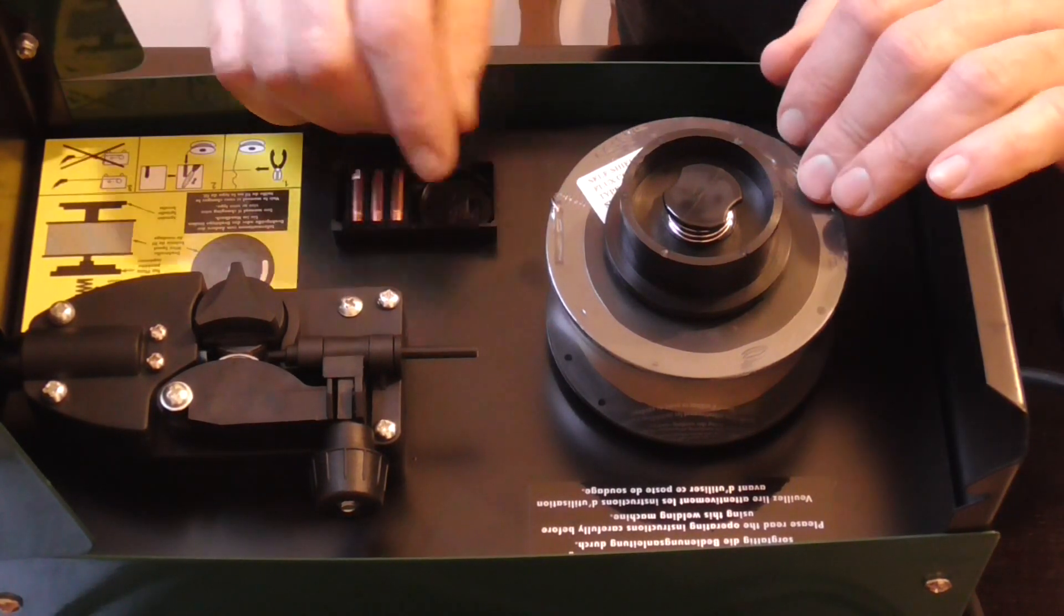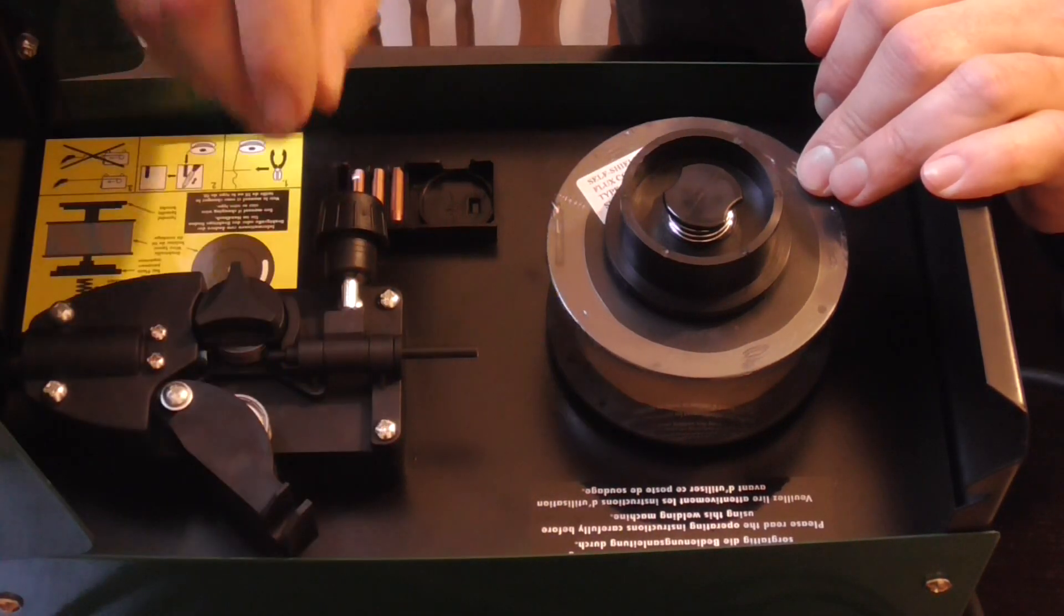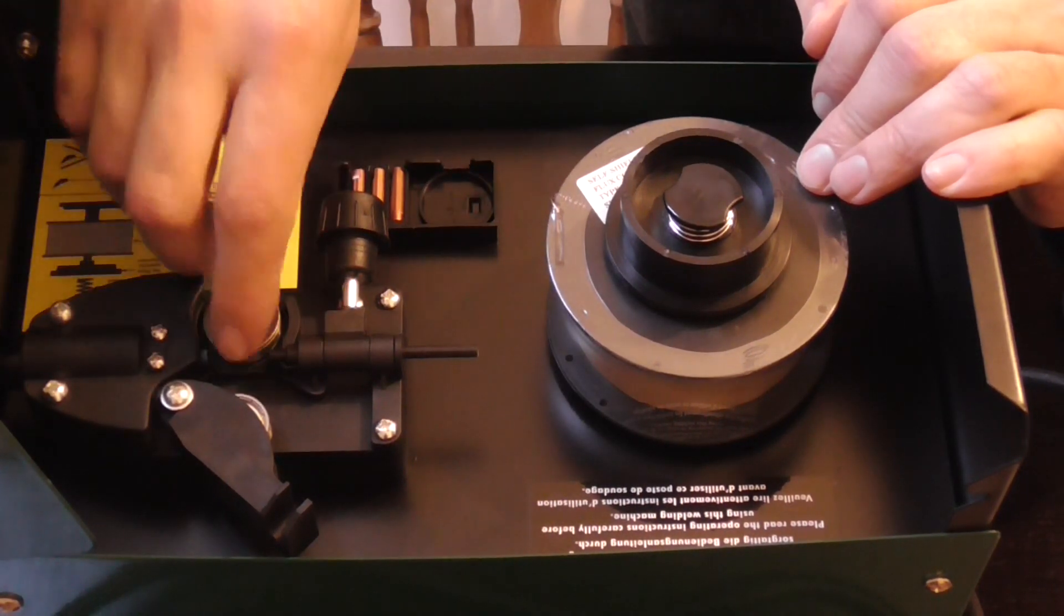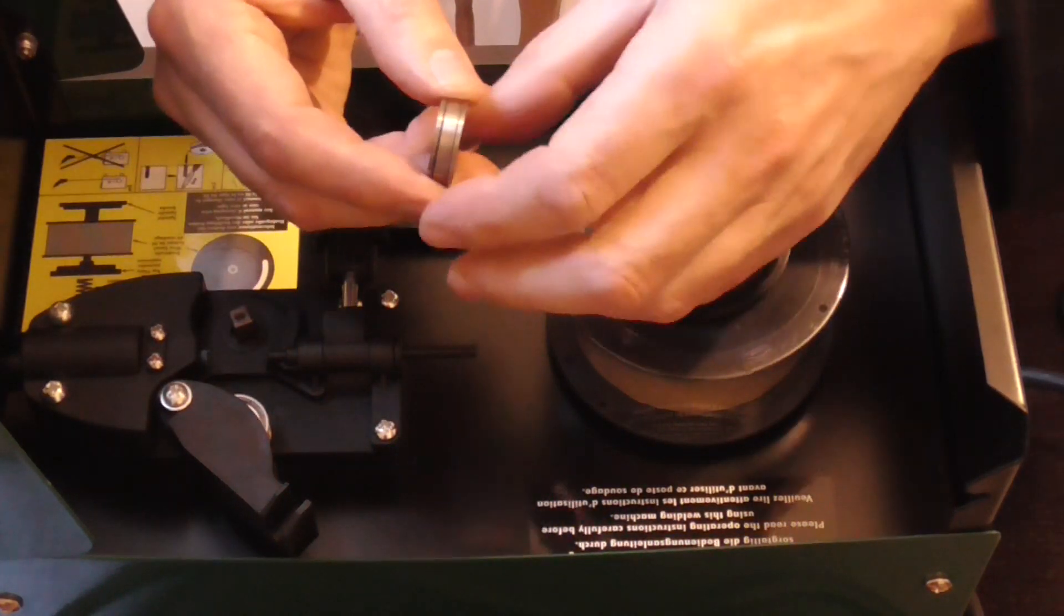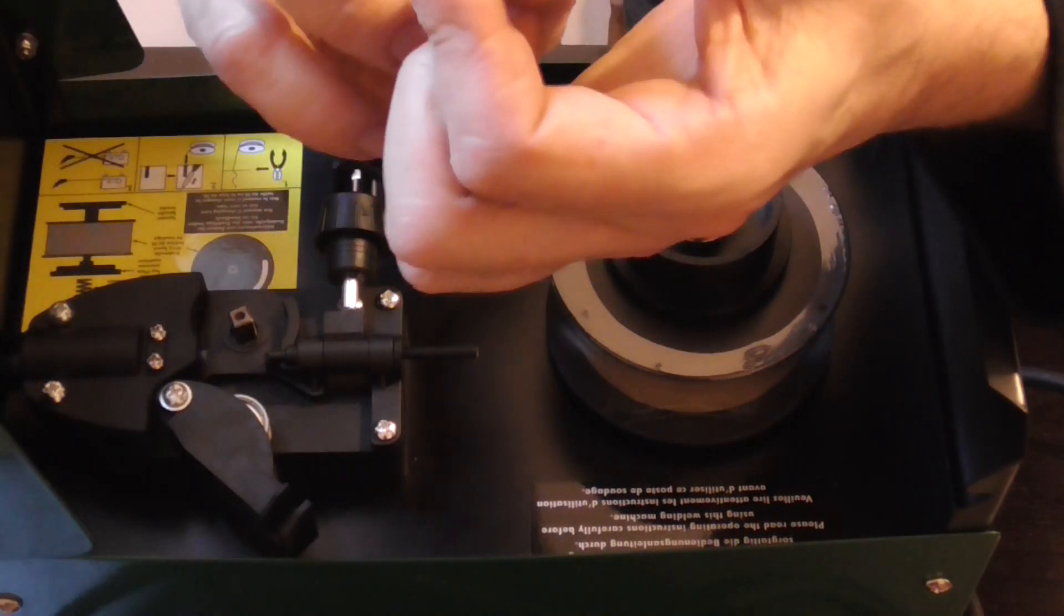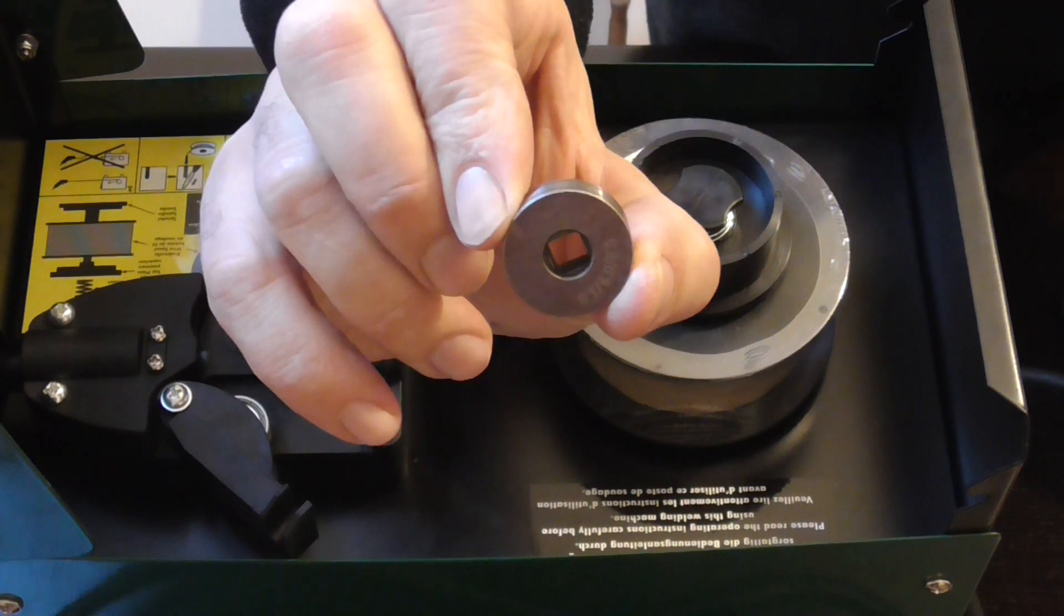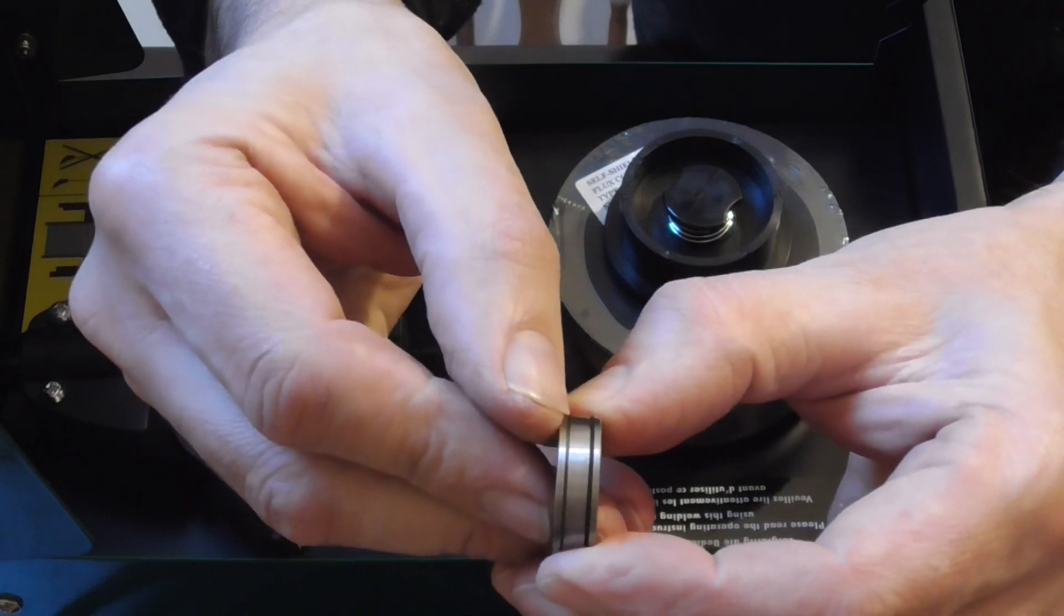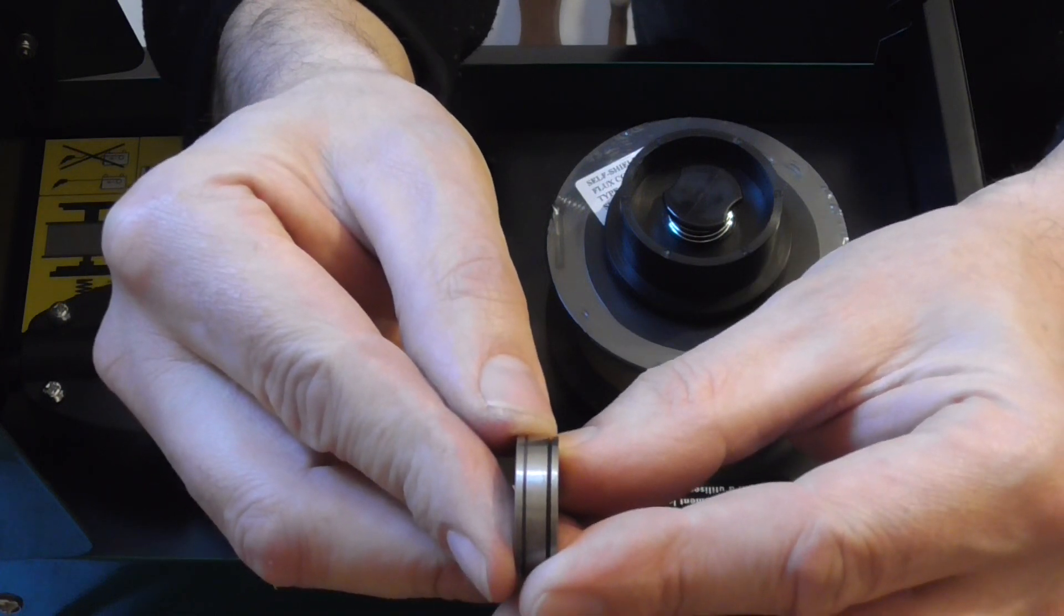Now to fit the wire we have to undo the tensioner. And I'm just going to check the pulley or the drive wheel here. The drive wheel has two grooves in it and also has a square drive in the center. It has a fine groove for the 0.6 and a slightly deeper groove for the 0.8, 0.9, and 1mm.